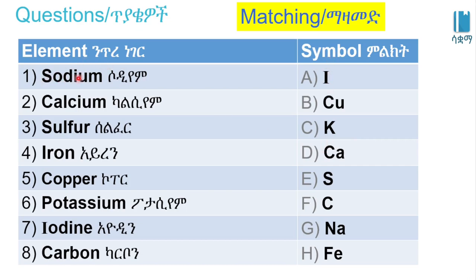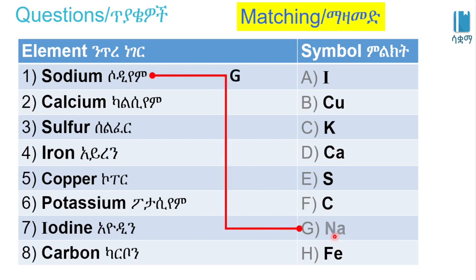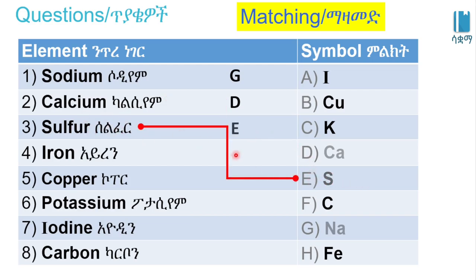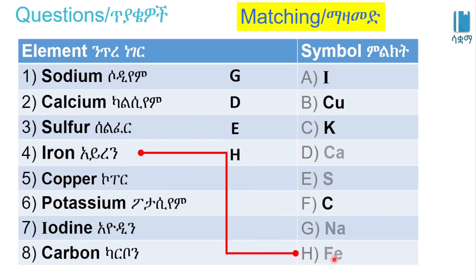Sodium — the symbol is Na, from the Latin name. Calcium — the symbol is Ce. Sulfur — the symbol is S. Iron — the symbol is Fe, from the Latin name ferrum.